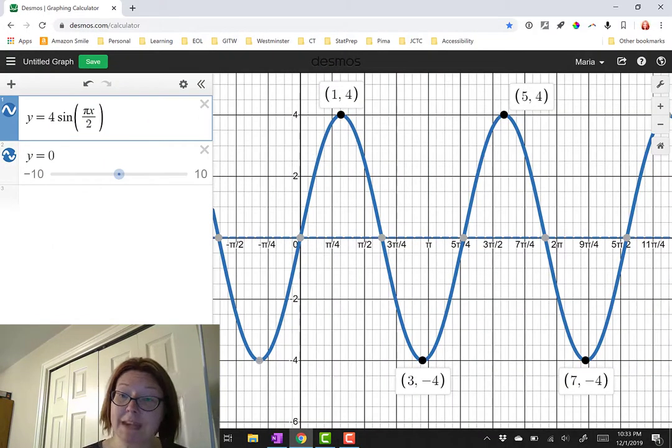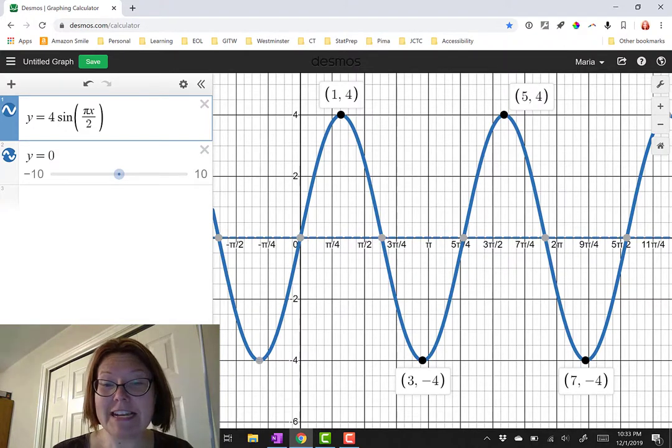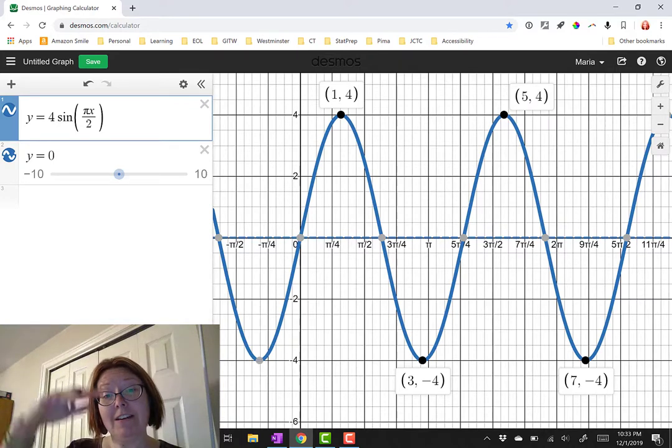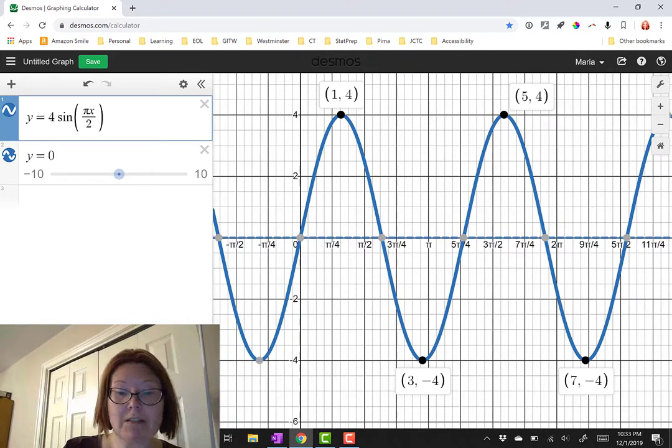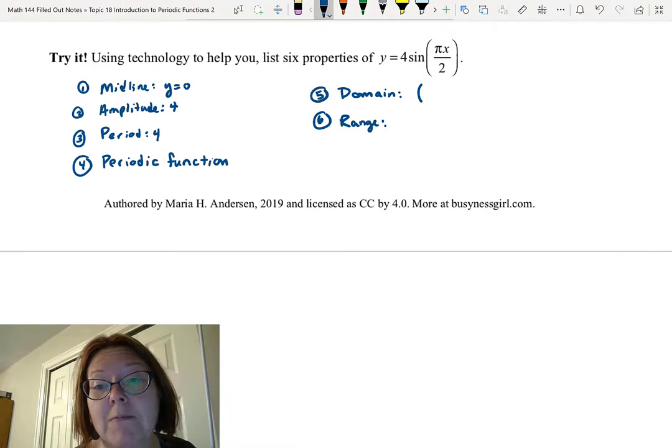Now the domain for this function is any value of x whatsoever, so negative infinity to infinity. And the range is from a minimum y value of negative 4 to a maximum y value of positive 4. So domain left paren negative infinity comma infinity right paren.